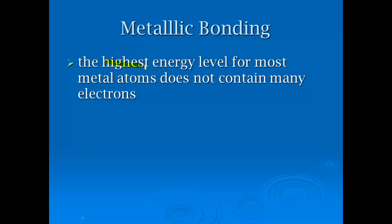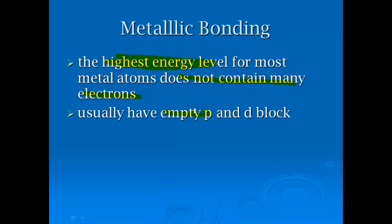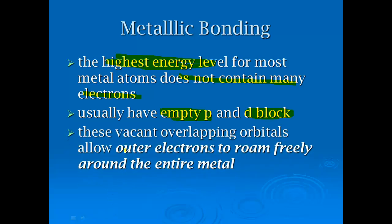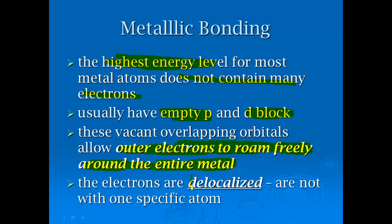With metallic bonding, the highest energy level for most metal atoms typically does not contain many electrons — they usually have empty P blocks and even slightly empty D blocks. Those vacant overlapping orbitals allow the outer electrons to roam freely around the entire metal. The electrons are what we refer to as being delocalized, meaning they're not with one specific atom — all the valence electrons are allowed to roam while the core ones stay put.